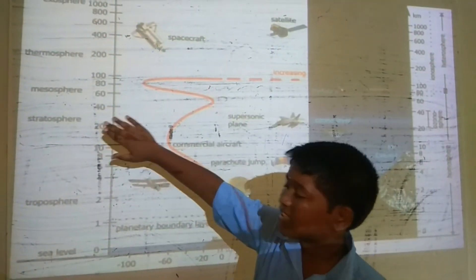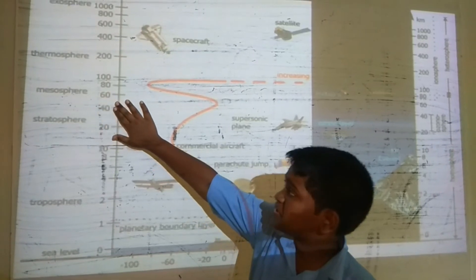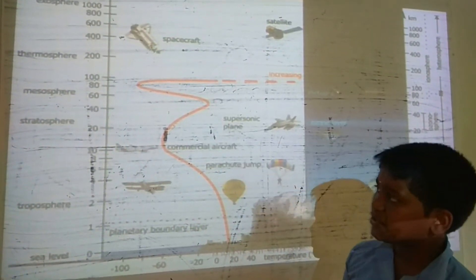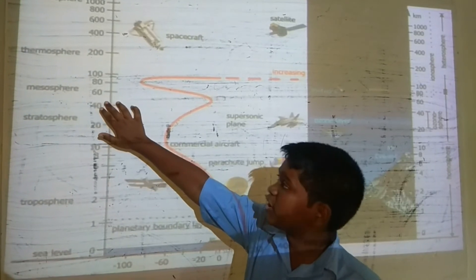If we cross 50 kilometers, the third layer is the Mesosphere. The Mesosphere extends from 50 to 80 kilometers. If we go upward in the Mesosphere, the temperature decreases.